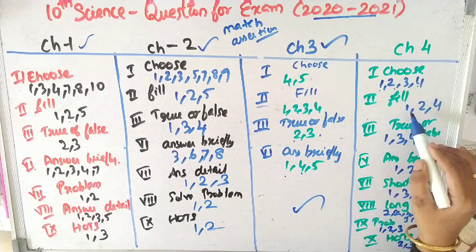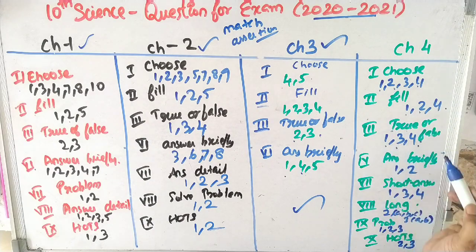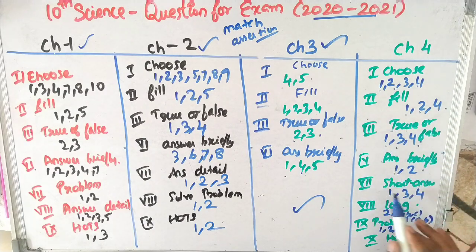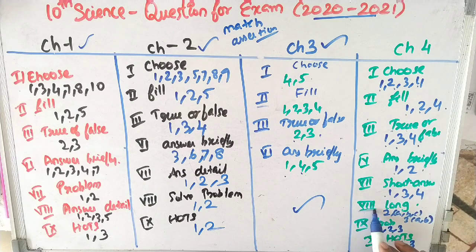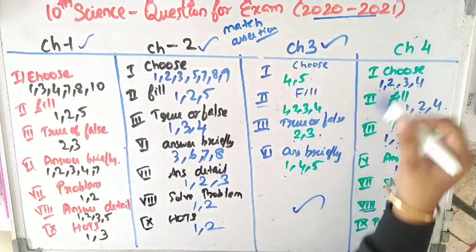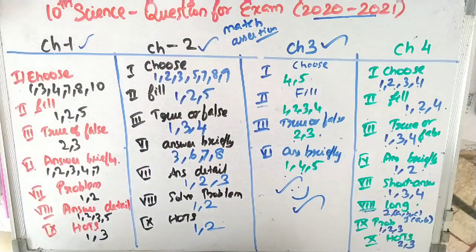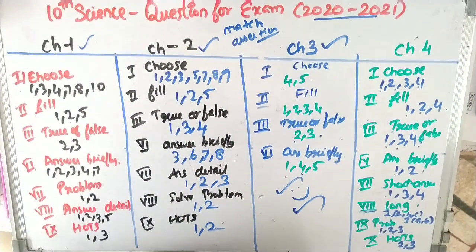In chapter 4, first Roman numeral: questions 1, 2, 3, 4. Second Roman numeral: questions 1, 2, 4. Third Roman numeral: questions 1, 3, 4. Fourth Roman numeral: questions 1 and 2. Roman numeral 7: questions 1, 3, 4. Eighth Roman numeral — long answer: question 2 (A, B, C). Third Roman numeral: questions 1, 3, 4. Problem: questions 1, 2, 3. Second Roman numeral: questions 1 and 2. Fourth Roman numeral: questions 1, 3, 4.